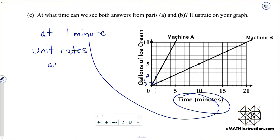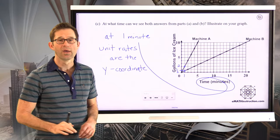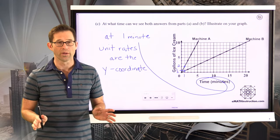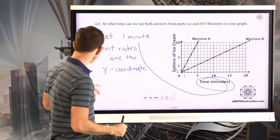And then we literally see the unit rates. The unit rates are the y-coordinate. That's why it's so very important to be able to read off coordinate pairs as we discussed in an earlier unit. All right, let's keep going.